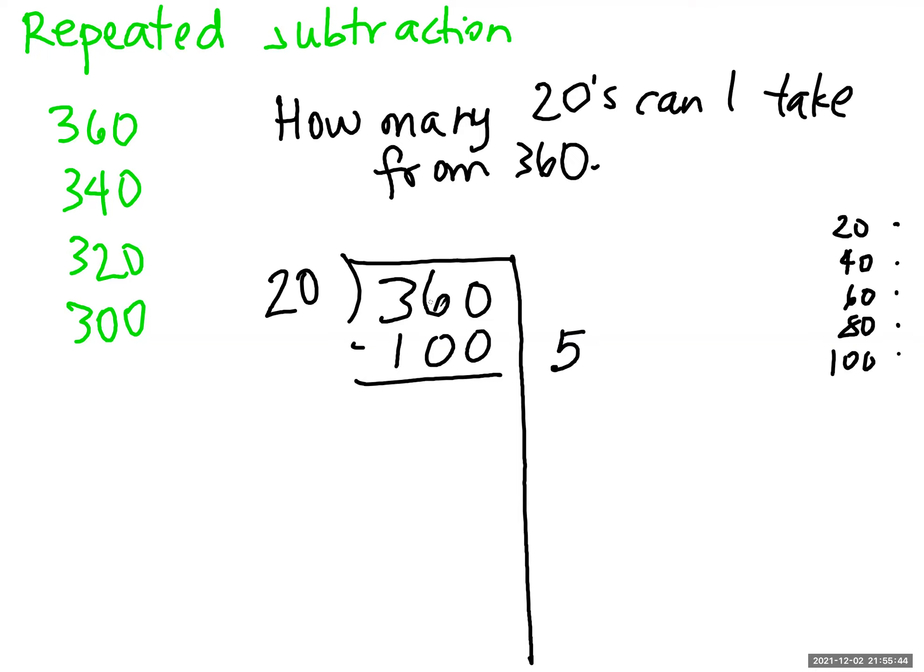I'm going to take away 100. 360 minus 100 is 260. I'm going to take another 5 twenties. I'm going to take 5 twenties away again, which we said was 100.